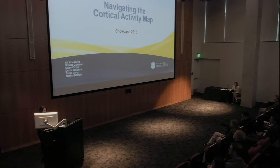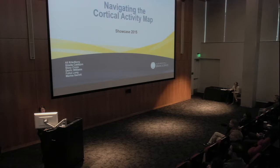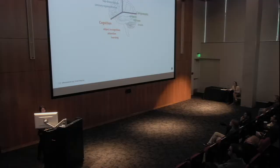Hi, I'm Marina Garrett and I am a scientist in the Neural Coding Group. I'm very proud to introduce our final team talk titled "Navigating the Cortical Activity Map." The MindScope Project is arranged around a set of nine important questions in neuroscience that can be organized along the axes of components, computation, and cognition. Today's talk features a pipeline project aimed at understanding sensory representations.